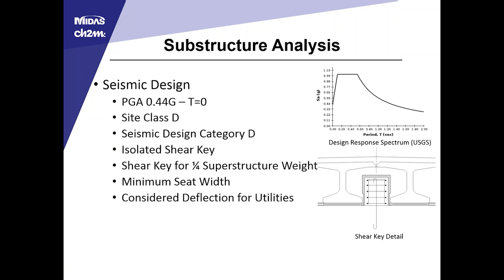The shear key is designed for a quarter of the superstructure weight elastically, based on half of each abutment end reaction. As it becomes inelastic, the force transfer will be somewhat variable as it transfers into the abutment. We also detailed for the minimum seat width following the seismic design criteria and considered deflections within reason to maintain enough space around the utility to avoid shear failure in utilities with differential displacement between superstructure and substructure.